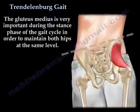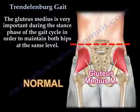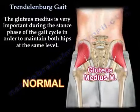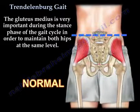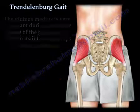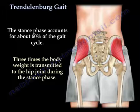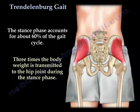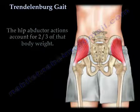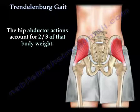The gluteus medius is very important during the stance phase of the gait cycle in order to maintain both hips at the same level. The stance phase accounts for about 60% of the gait cycle. Three times the body weight is transmitted to the hip joint, and the hip abductor actions account for two thirds of the body weight.